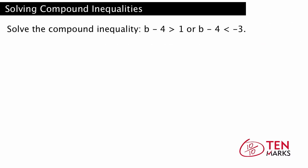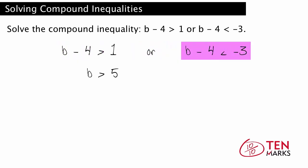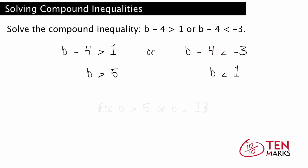Now let's look at a compound inequality where the two properties represent an OR statement: b minus 4 is greater than 1 or b minus 4 is less than negative 3. First solve each simple inequality separately. Since b minus 4 is greater than 1, add 4 to both sides and get b is greater than 5. Now solve the other inequality: since b minus 4 is less than negative 3, add 4 to both sides and get b is less than 1. The solution set is the set of all b such that b is greater than 5 or b is less than 1.